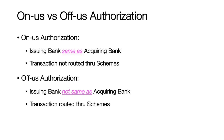An important terminology to know: an on-us transaction is where the issuer bank is the same as the acquiring bank. In this case, the authorization is not routed through schemes — instead it is decided within the bank's network itself. On the contrary, if the issuing bank is not the same as the acquiring bank, it is called an off-us transaction and is routed through schemes.